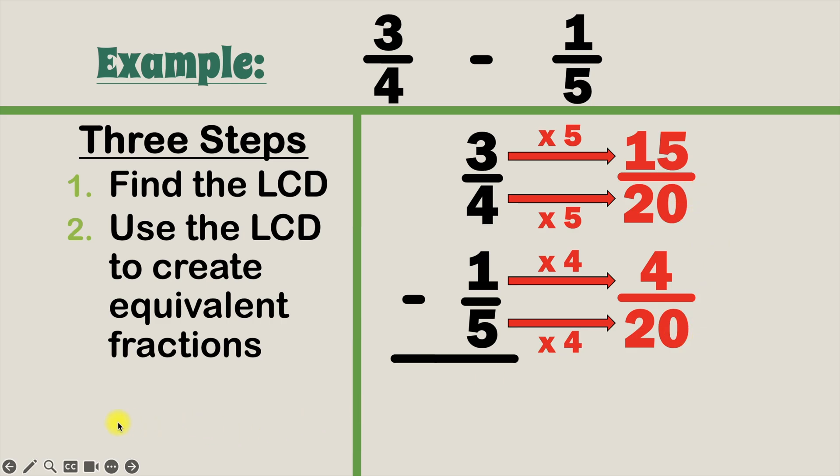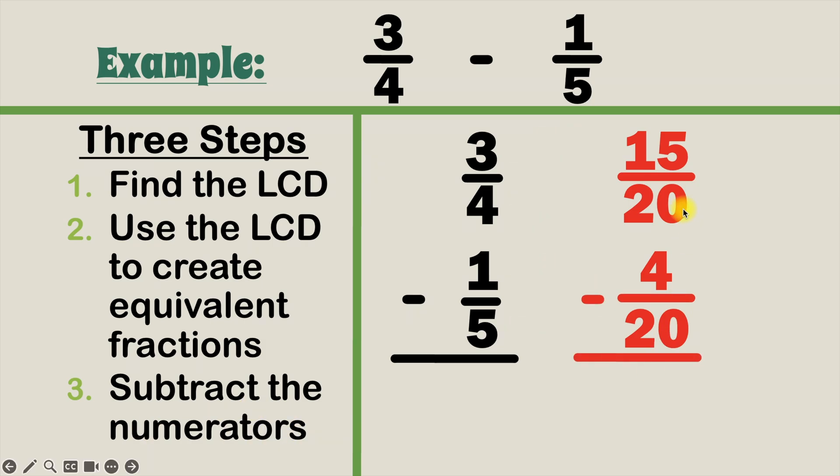Now that we have fractions with the same denominator we can go to step 3, which is to subtract the numerators. So let's set that up and now all we have to do is do 15 minus 4, and that gives us 11. And since the denominator is 20, our final answer is 11 over 20.